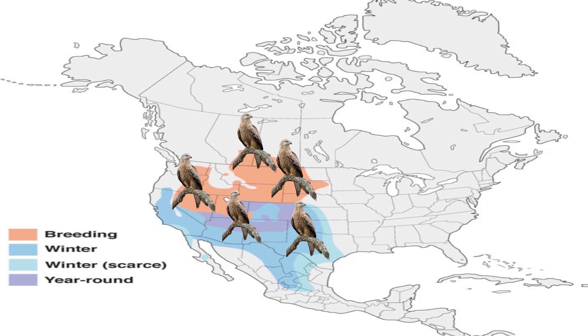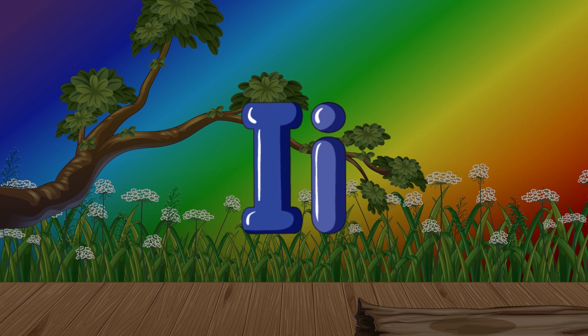Most hawks have a long tail and short, rounded wings, which allow them to fly fast and low in areas with bushes and trees.